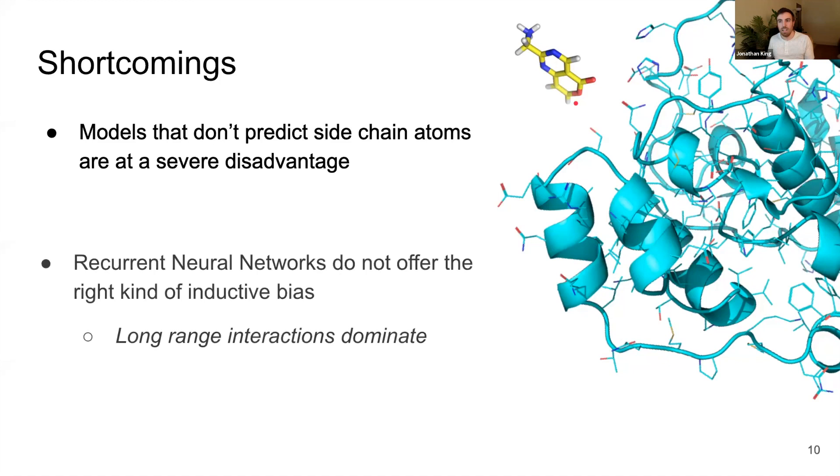The second shortcoming that I've tried to address is the fact that recurrent neural networks, I don't think, have the right inductive bias for this task. Because recurrent neural networks operate on a sequence element one piece at a time, they're not able to really remember things that are very far apart. I think that's really important for proteins because you'll have amino acids that are very far apart in the sequence, but they'll fold up together in the 3D space. And I think that that deserves a special model architecture, which I'll talk about in a little bit.